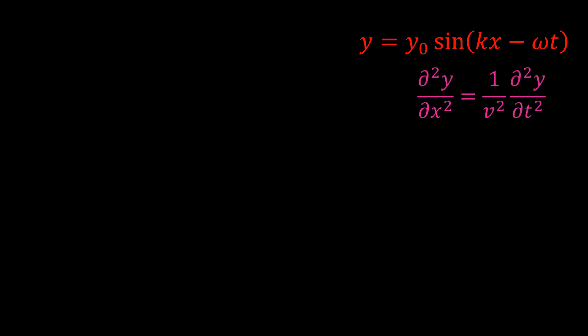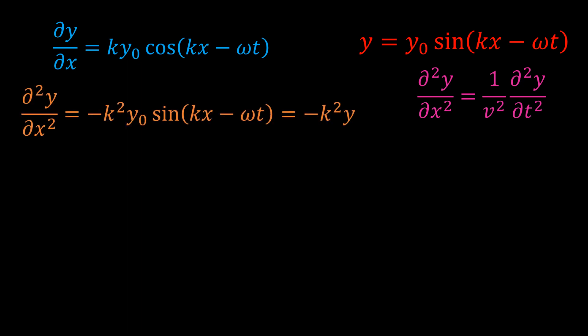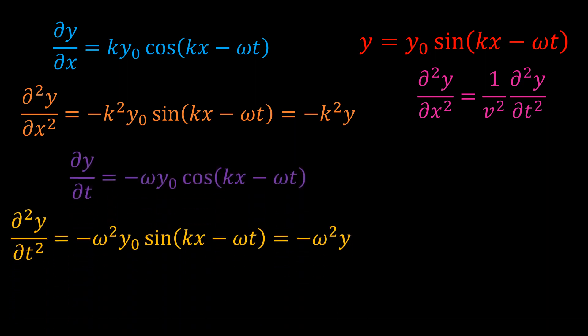To check that this wave function is indeed a solution to the wave equation, let's substitute it into the wave equation. The first derivative of y with respect to x is as shown. Differentiating again yields this, which is just minus k squared times the wave function y. The first and second derivatives of y with respect to time are given as follows, which simplifies to minus omega squared y.